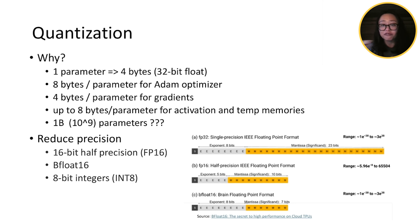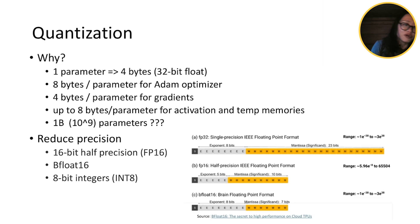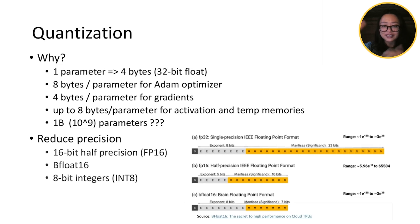Now, if you need to fine-tune or train, you have other things. At eight bits per parameter for your Adam optimizer, four bits for gradients, and up to eight bits for activations and temporary memory — it really adds up.